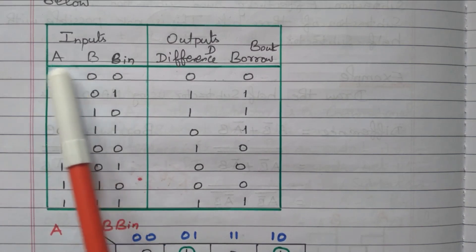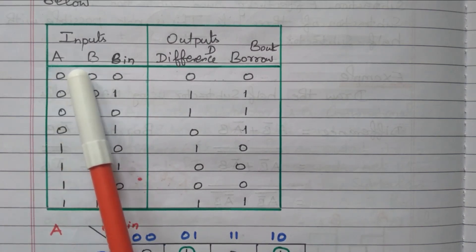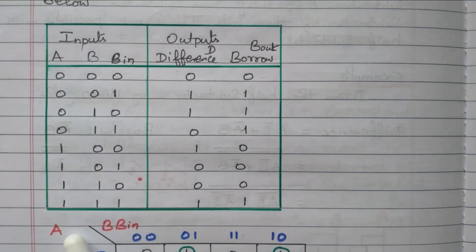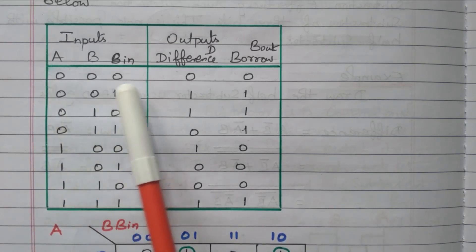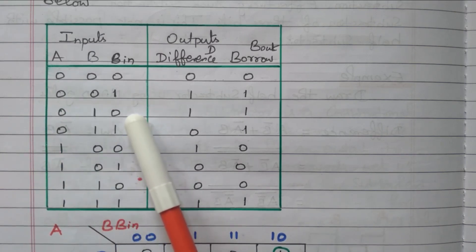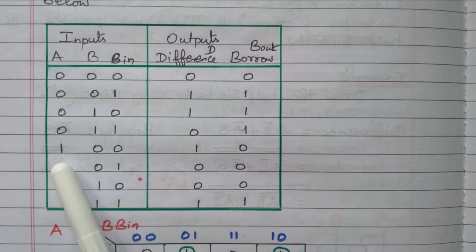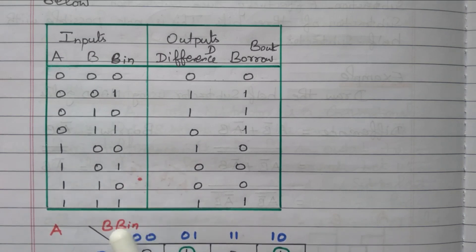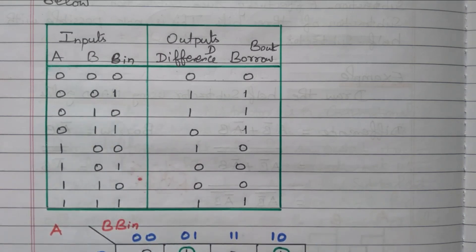For the two inputs A and B alone, there are four combinations: 0 0, 0 1, 1 0, and 1 1. For each combination, the Borrow-In may be 0 or 1, giving us eight total combinations.